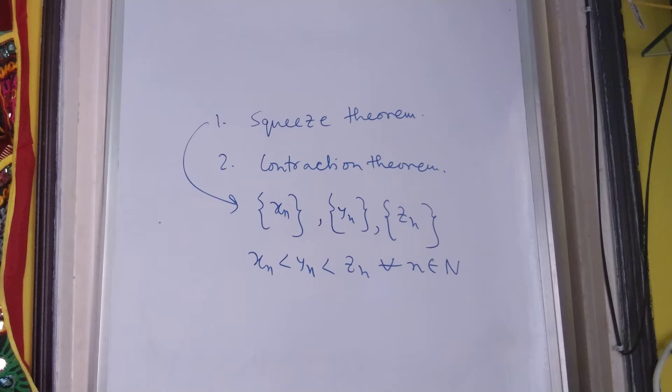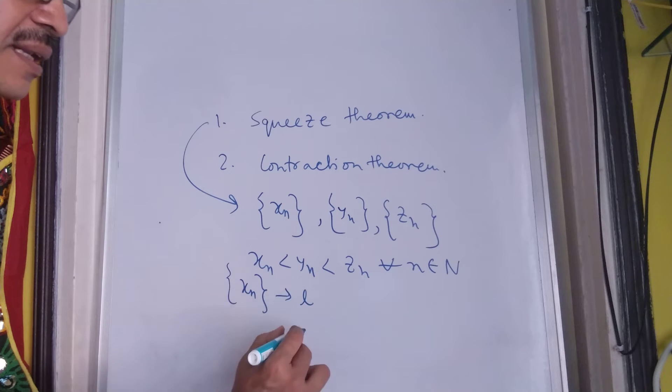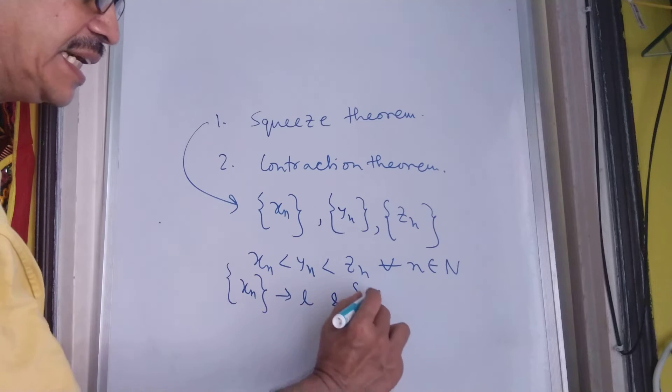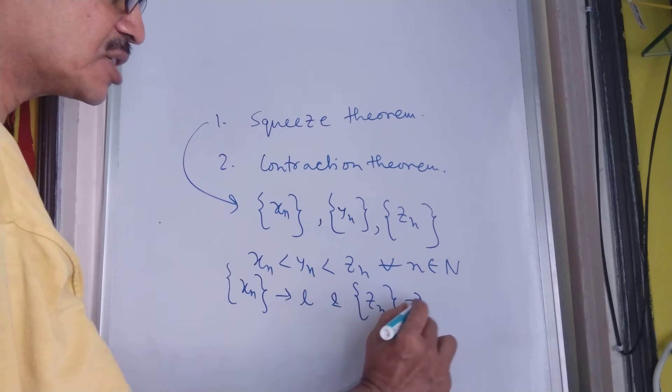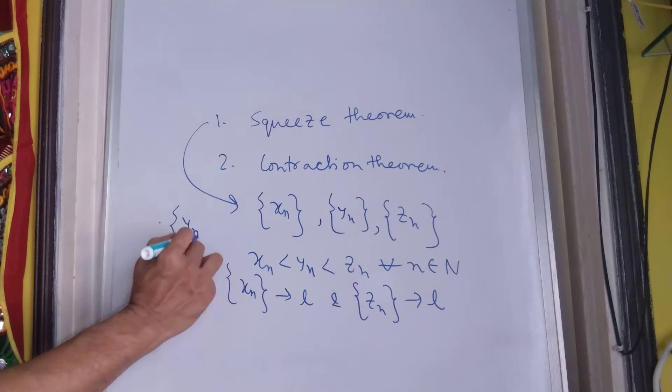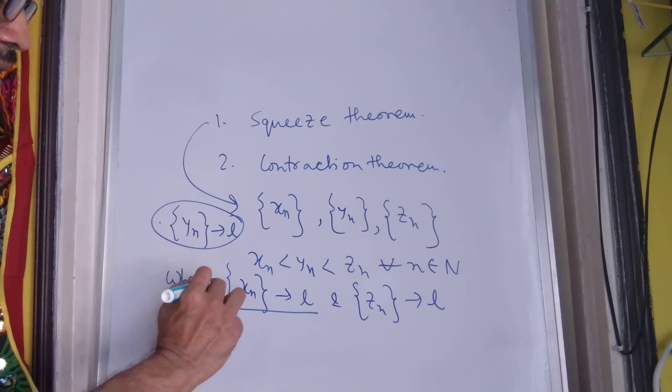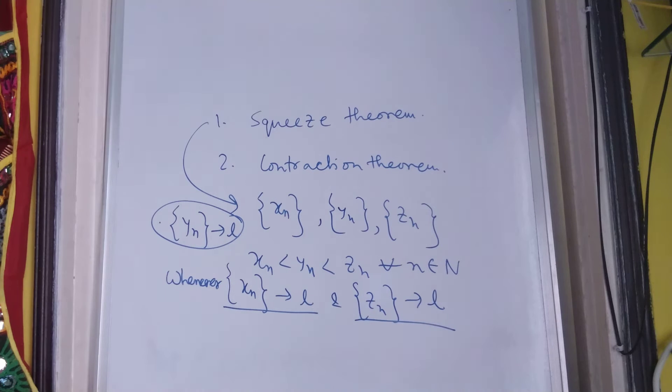Then whenever xn converges to l and zn converges to the same limit l, yn will always converge to the same limit l. Whenever these two converge, we must have the middle sequence converge to the same point.